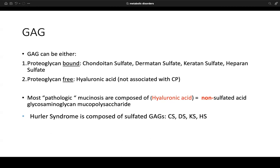Most pathologic mucinoses are composed of hyaluronic acid, a non-sulfated acid glycosaminoglycan and mucopolysaccharides. From your Step 1 studies, remember that Hurler syndrome is composed of sulfated glycosaminoglycans — chondroitin sulfate, dermatan sulfate, keratan sulfate, heparin sulfate, etc. Don't forget how important ground substance, glycosaminoglycans, and proteoglycans are in dermatology.